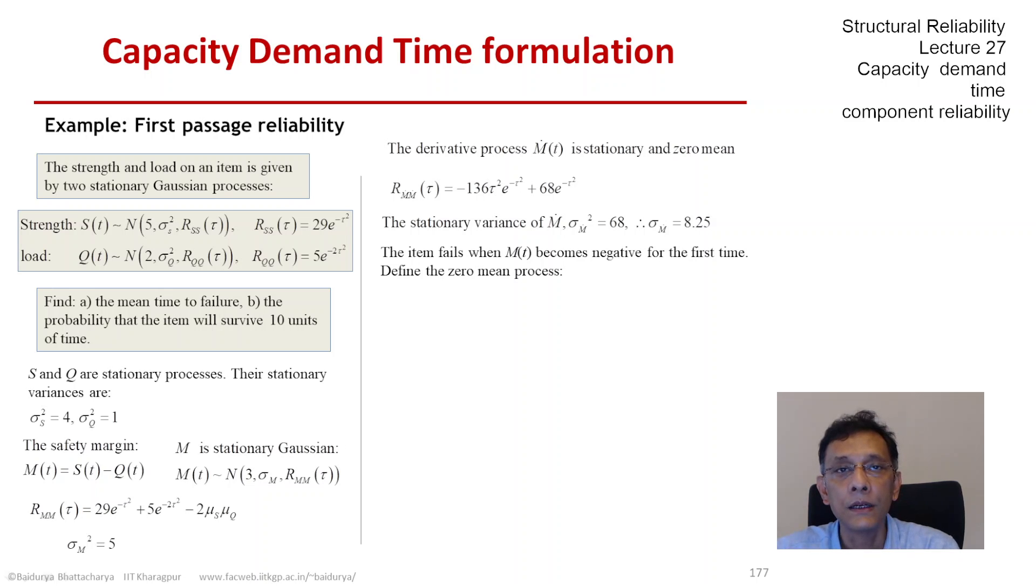We know that the mean of M is 3, so let us just take the difference and define a new margin M₀ as 3 minus M(t), and this M₀ now is a zero mean process.